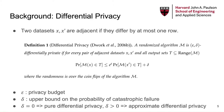Epsilon is typically referred to as privacy loss or privacy budget. It could be a small constant but not negligible. Delta is also incorporated since it turns out to be quite useful. Delta can be interpreted as an upper bound on the probability of catastrophic failure, for example, the entire dataset being published, so it is sometimes called security parameter. When delta is zero, the notion is often referred to as pure differential privacy.